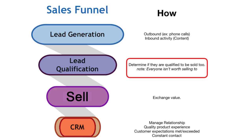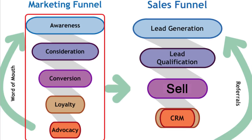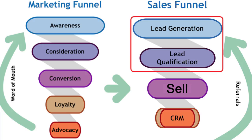Now let's compare the marketing and sales funnel and hop into what that looks like specifically for an artist. In the marketing funnel you go through awareness, consideration, conversion, loyalty, and advocacy. Basically, a fan discovers you, starts to like your music, listens to more after those first few songs, gets into your brand, becomes loyal, and then tells more people about your music. For a musician at a high level: they're discovering your music and brand, consuming your brand, and then spreading it.